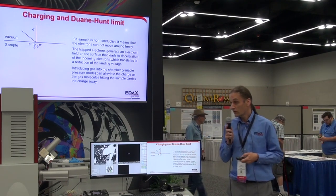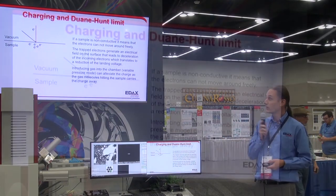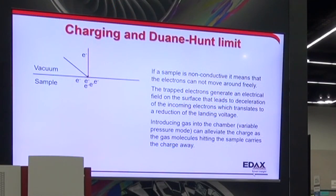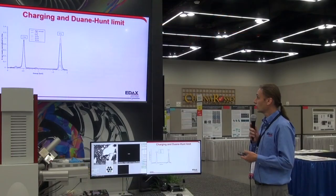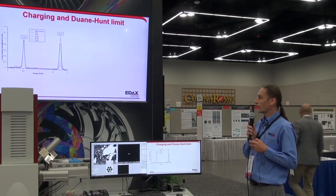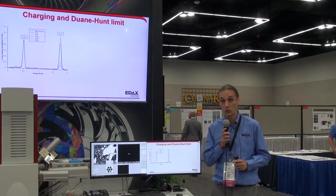One way to get around this is variable pressure mode. If we put the microscope into variable pressure mode, we run a dirty vacuum — bleed a bit of gas in — and gas molecules floating around will hit the sample surface and carry away the charge. So variable pressure is one of the methods we can use to get around charging. The point is that the spectrum and the background will tell us when we have charging and when we do not.